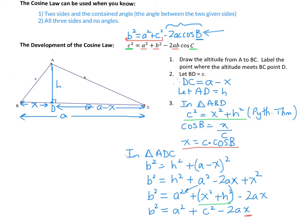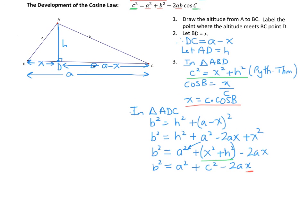Substituting X equals C times cosine of angle B gives us B squared equals A squared plus C squared minus 2 times A times C times the cosine of angle B. And there is the proof — the development of the cosine law.